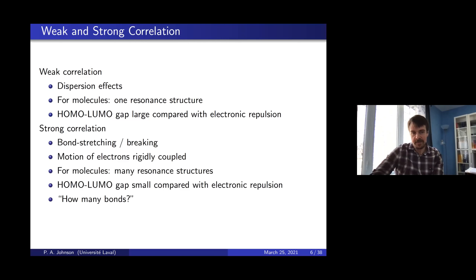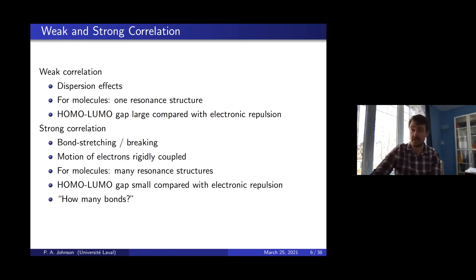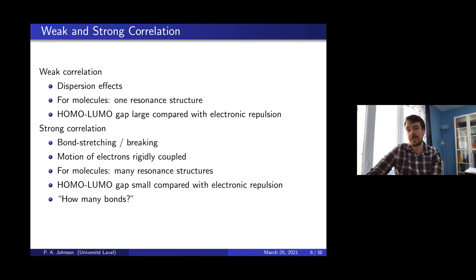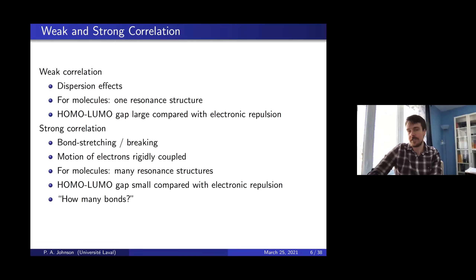For other types of materials, correlation is strong — for example, when you stretch or break a bond, when you have rigidly coupled motion of electrons (a prototypical example being the SN2 transition state, where two electrons move and cause two others to move directly), when there are many resonance structures that are important, when the HOMO-LUMO gap is small compared to the inter-electronic repulsion, or in any situation where you find yourself asking how many bonds there are. In such situations the electrons are strongly correlated.